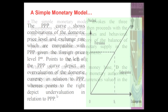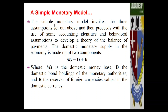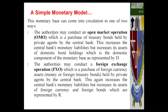The simple monetary model invokes these three assumptions and uses accounting identities and behavioral assumptions to develop a theory of the balance of payments. The domestic money supply consists of two components: the domestic money base equals domestic bond holdings D plus foreign currency reserves R. Here D represents the bond holdings of the monetary authorities, and R is the reserve of foreign currency valued in domestic currency.